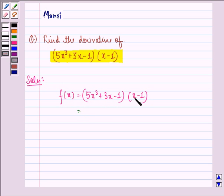We have 5x³ into x is 5 into x raised to power 4. 5x³ into -1 is -5x³ plus 3x into x is 3x² plus 3x into -1 is -3x.